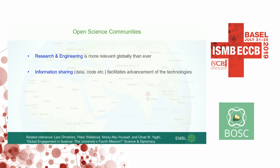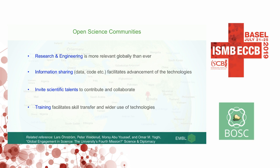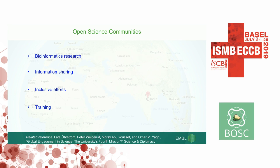It is very important at this stage because research and engineering is more relevant globally than ever. We emphasize on information sharing — such as data and code — because it facilitates advancement; people can build upon your work. It also invites scientific talent to contribute and collaborate, and training facilitates skill transfer. So these are the four themes I'll be touching throughout my talk: bioinformatic research, information sharing, inclusive efforts, and training.